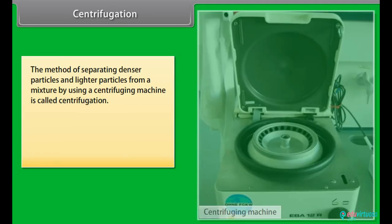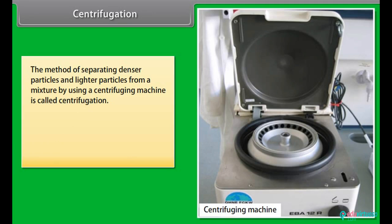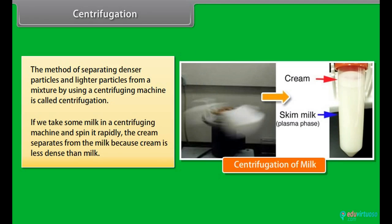Centrifugation: This is the method of separating denser particles from lighter particles in a mixture by using a centrifuging machine. For example, if we take some milk in a centrifuging machine and spin it rapidly, the cream separates from the milk because cream is less dense than milk.